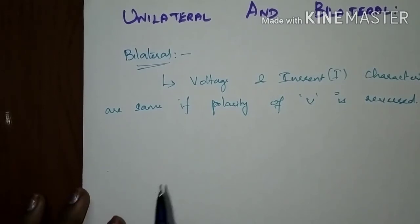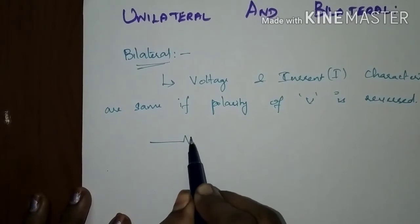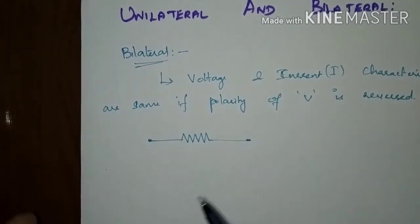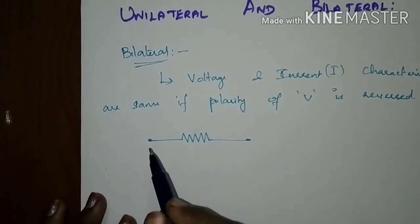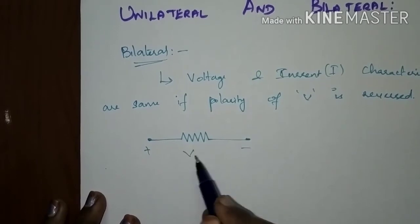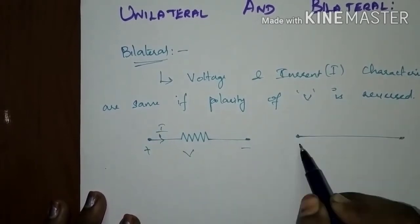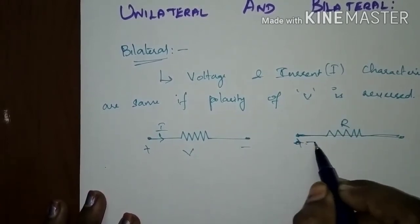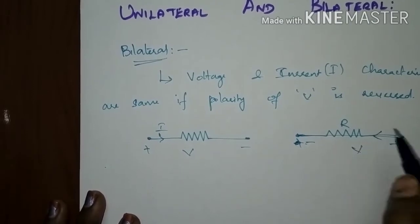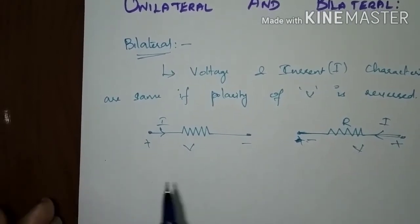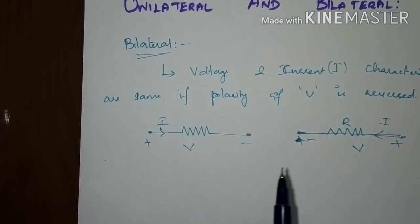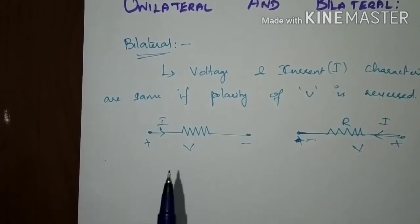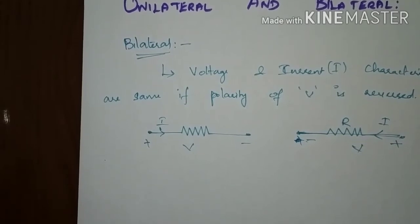The best example of a bilateral element is a resistor. If you apply the voltage in either direction by reversing it, the current direction will also reverse. If you apply a voltage, conventional current will flow from positive to negative. Even in bilateral elements, if you reverse the voltages, the current and voltage relationship will be the same — it will not change. Those elements are termed bilateral elements.